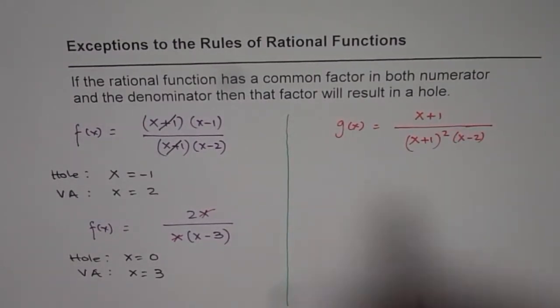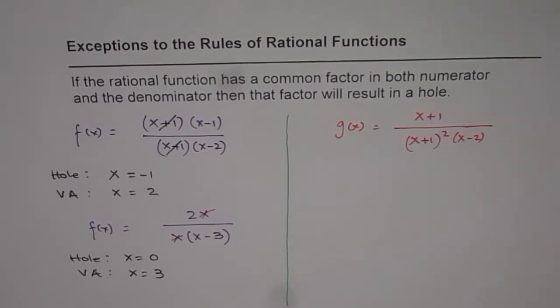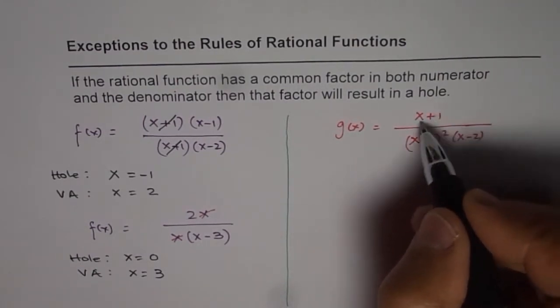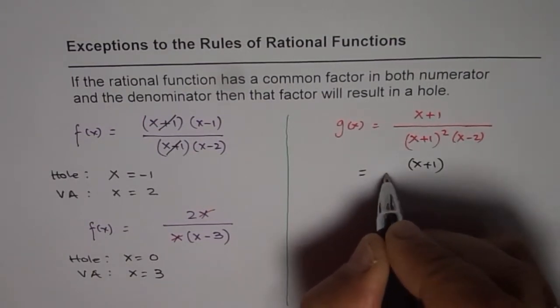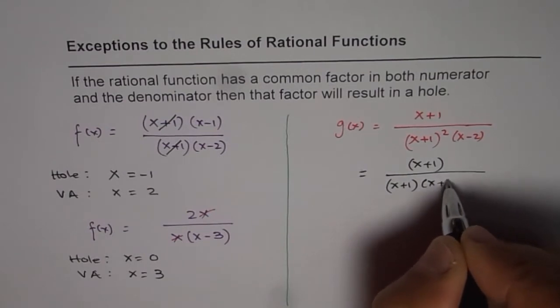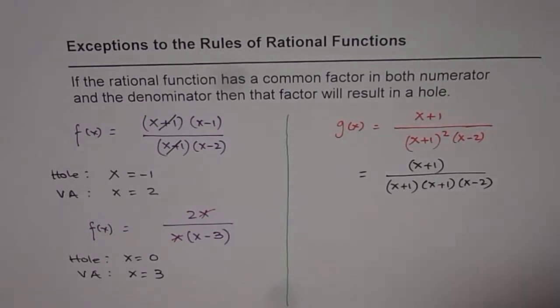Now, as you can see here, we do have a common factor x plus 1. So let me rewrite this as x plus 1 and then we have here x plus 1 times x plus 1 times x minus 2. Now in this case, we do have a common factor which cancels out. But does that lead to a hole? That is the question.